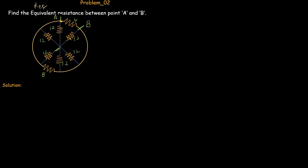Before solving this problem let's analyze this network briefly. The three resistors connected to point A are in parallel because one end of each is connected to point A and the other end is connected to the center of the circle. Similarly, the three resistors connected to point B are also in parallel. The 4 ohm and 8 ohm resistors are also in parallel because both share point A and point B as their two endpoints.